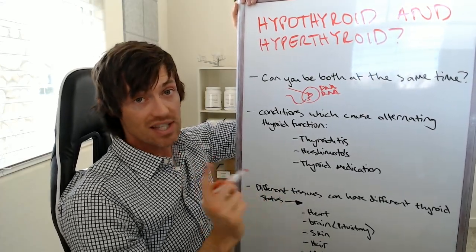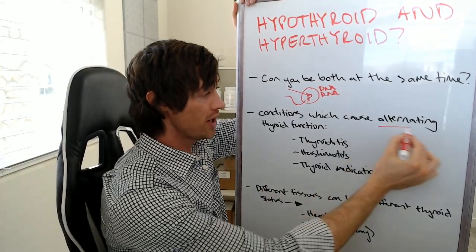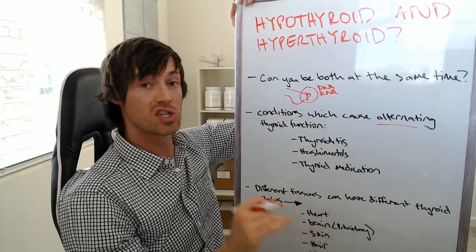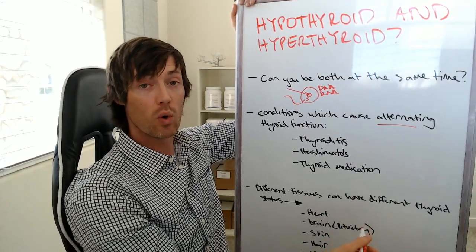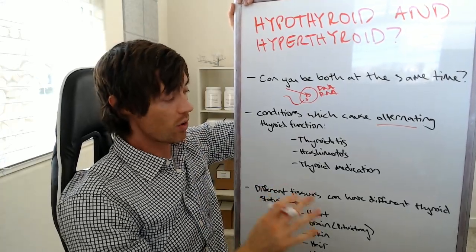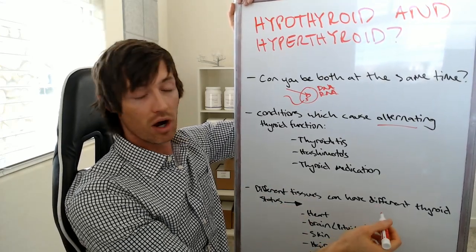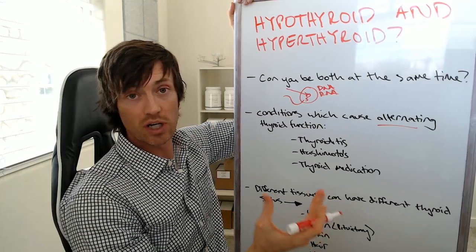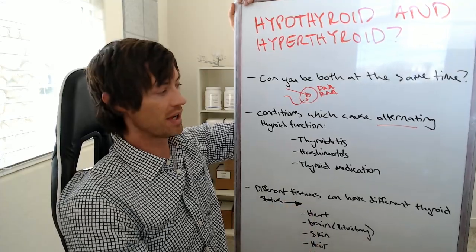So a single tissue cannot be both overstimulated and understimulated simultaneously. Now, having said that there are a lot of people which suffer from one of two things. They either have alternating thyroid function, meaning they're going in and out of a state of hyperthyroidism to hypothyroidism. And then you have people who are experiencing different levels of thyroid stimulation in different tissues. So I would say you have to kind of figure out which group you fall into here.